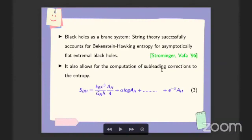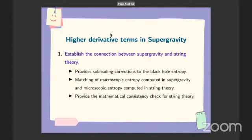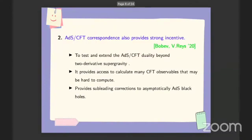Note, although the leading term of entropy is universal, the coefficient alpha and beta appearing in the subleading corrections will depend on a given theory. However, due to lack of experimental evidence for string theory, one relies on some theoretical tests to verify the mathematical consistency of string theory. And supergravity theory, being the low energy limit of string theory, can provide such consistency checks. And this is where high derivative terms in supergravity comes into the picture. So high derivative terms in supergravity can provide us subleading corrections to the black hole entropy, and matching of macroscopic entropy computed in supergravity with the microscopic entropy calculated in string theory can give us the mathematical consistency check for string theories that we were looking for. Other than that, ADS-CFT correspondence also provides strong incentives to study high derivative terms in gauge supergravity theory.